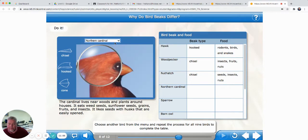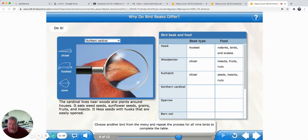Northern cardinal. I like cardinals. There's one that has this little cone-shaped beak, isn't it? It's not chisel. It's not long and narrow. It's a wider bill. Cardinals have a cone-shaped bill. Let's read about them. The cardinal lives near woods and plants around houses. It eats weed seeds, sunflower seeds. I eat sunflower seeds too, don't you? Grains. Fruits. And insects.